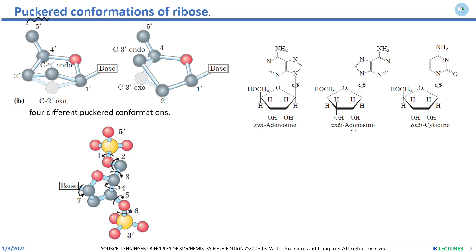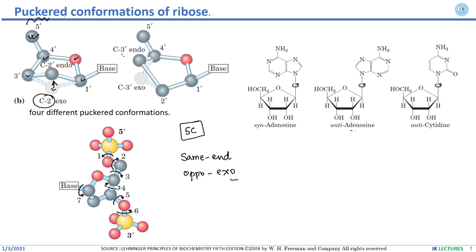Ribose is a five-carbon sugar. These five atoms are normally arranged in a single plane. If any atom moves from its native position toward the upper side — the same side as the fifth carbon — it is called endo. If it moves to the opposite side, it is called exo. This can occur at the second or third carbon, giving four different puckered conformations.